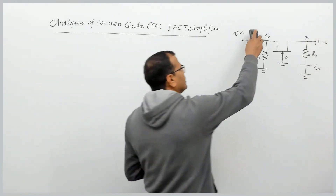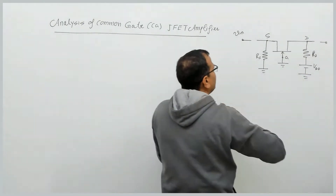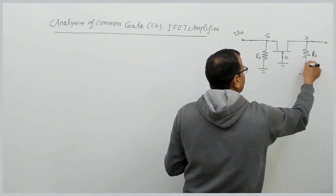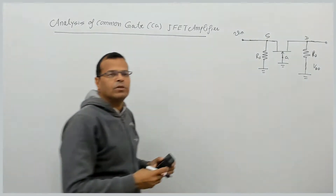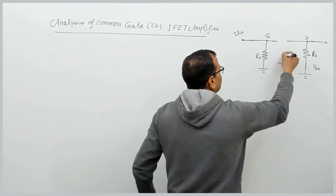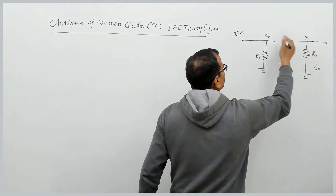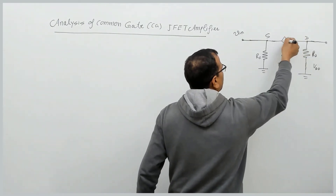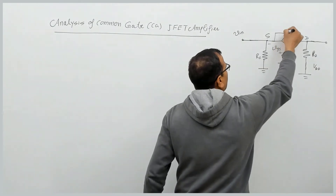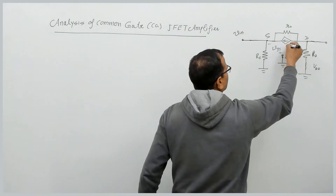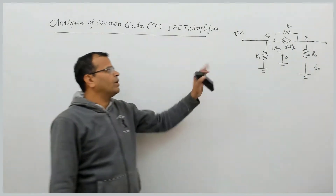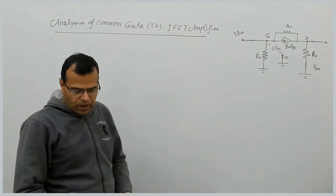The procedure of analysis is: replace all coupling capacitors by short circuit, replace the biasing voltage source by short circuit, and replace the JFET by its small signal model. The resulting model has the gate terminal, a dependent current source gm·vgs between the drain and source terminals, voltage vgs across them (plus to minus), and resistance r_naught connected between drain and source.